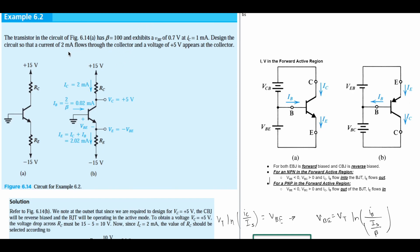Example 6.2: We have a transistor in the circuit with a β of 100 and it exhibits a VBE of 0.7 volts at an IC of 1 milliamp. We're going to design the circuit so that a current of 2 milliamps flows through the collector and a voltage of 5 volts appears at the collector.